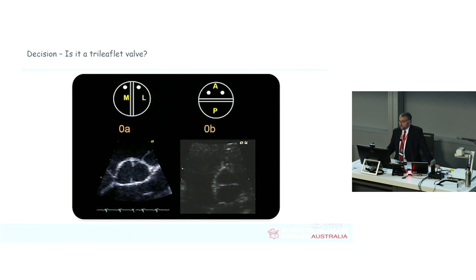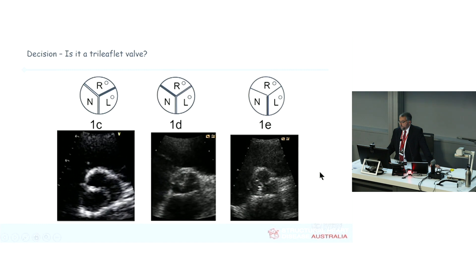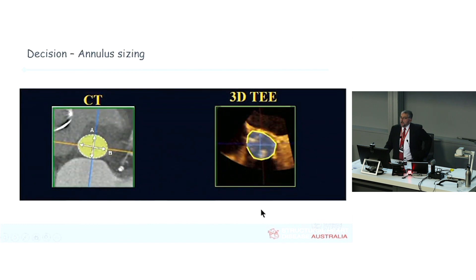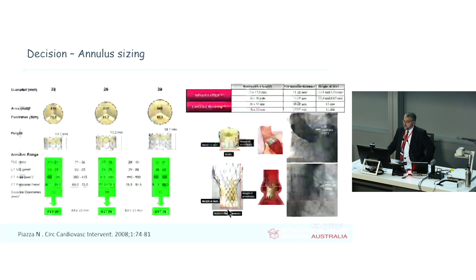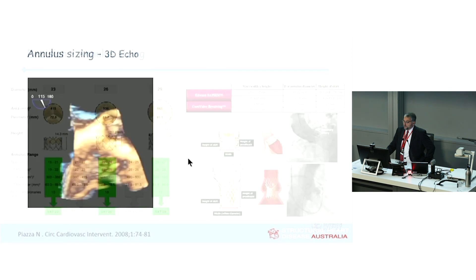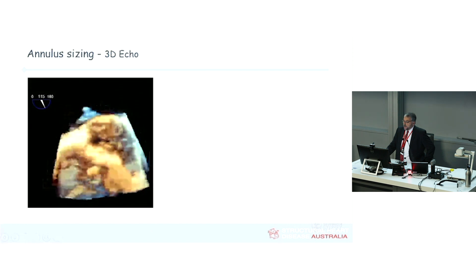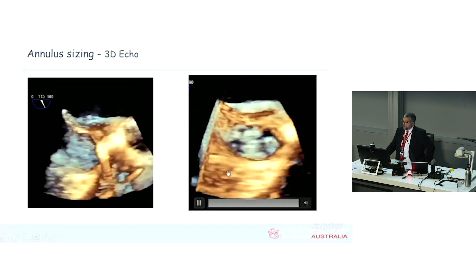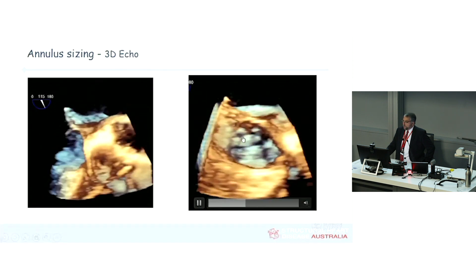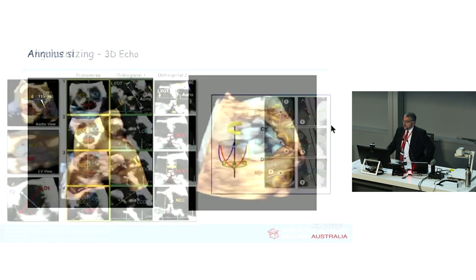The second decision is whether it's a tri-leaflet valve, because all current TAVI devices are designed for tri-leaflet valves. What we care about most is that it has an annulus we can fit a TAVI into. There are two fundamental types: balloon-expandable valves and self-expanding valves. You want to ensure that the prosthetic material opposes the circumference all around so that there's no leak, because paravalvar leak is a very bad thing.